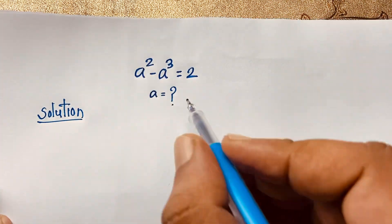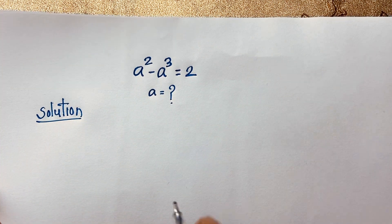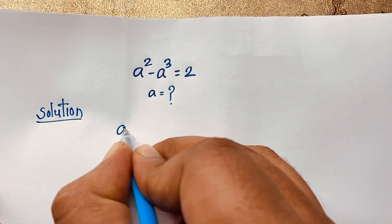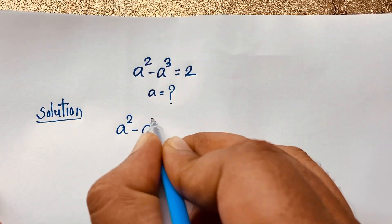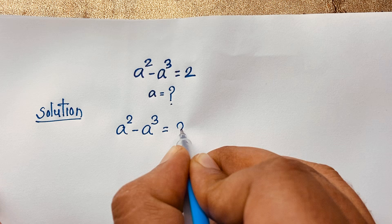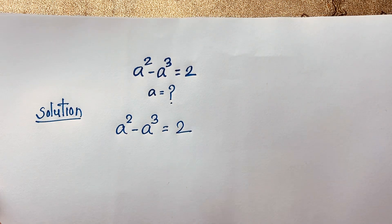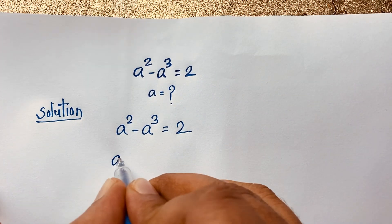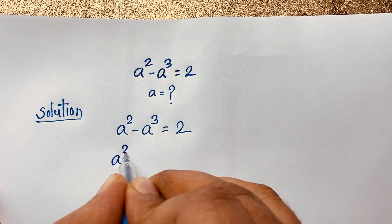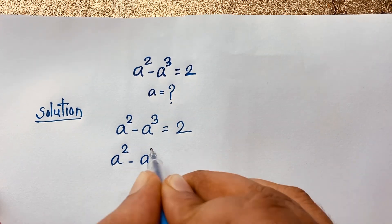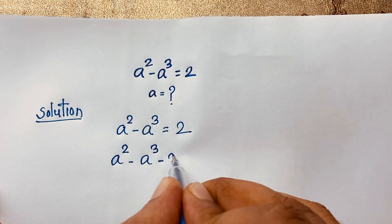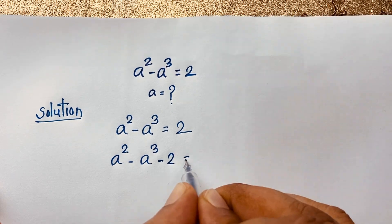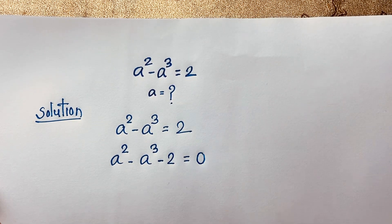Our question is: a squared minus a to the power 3 is equal to 2. I will solve this question step by step. Moving the terms to one side, we get a squared minus a to the power 3 minus 2 is equal to 0.